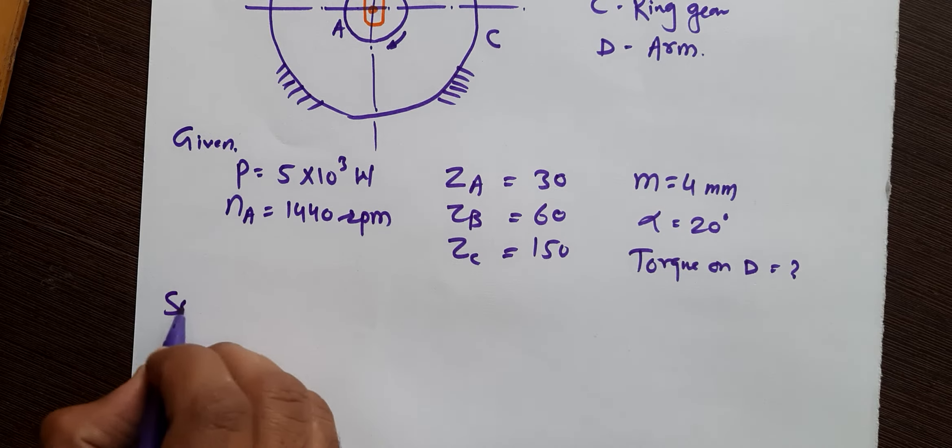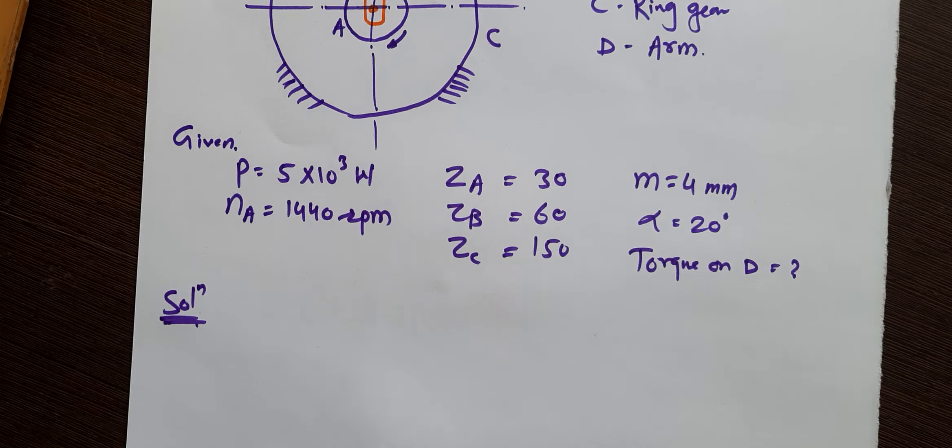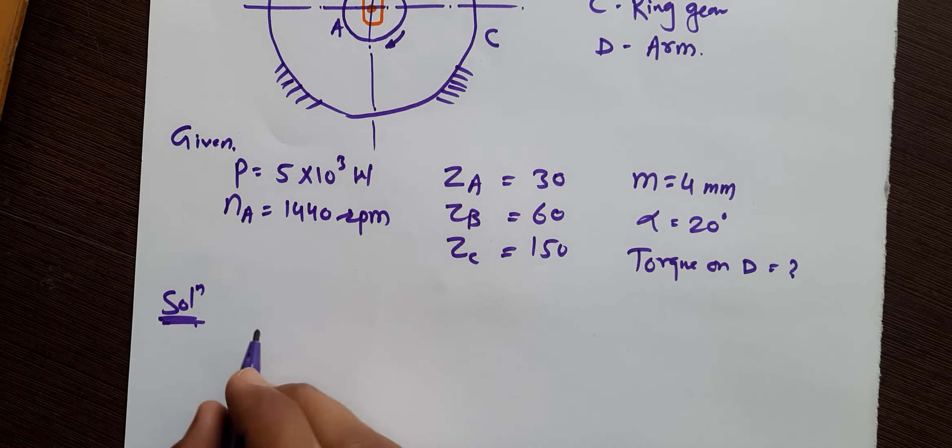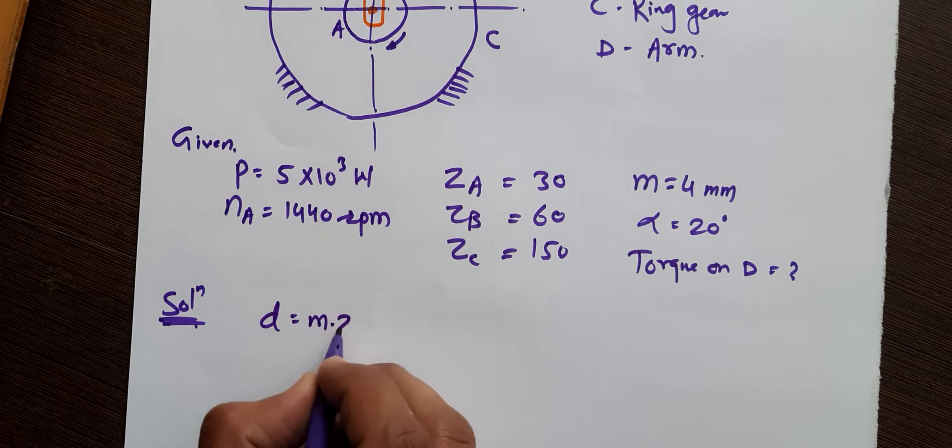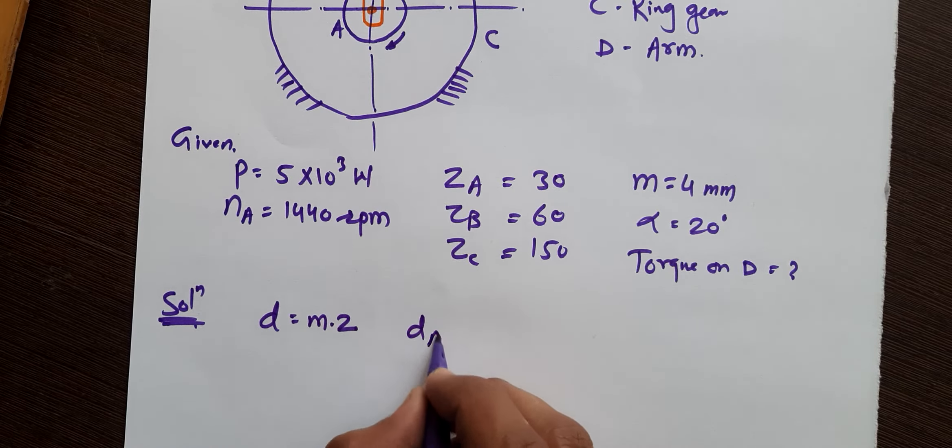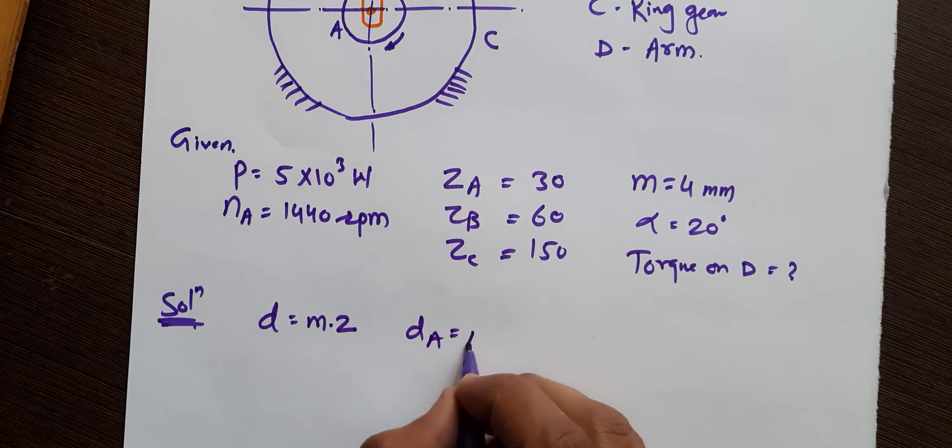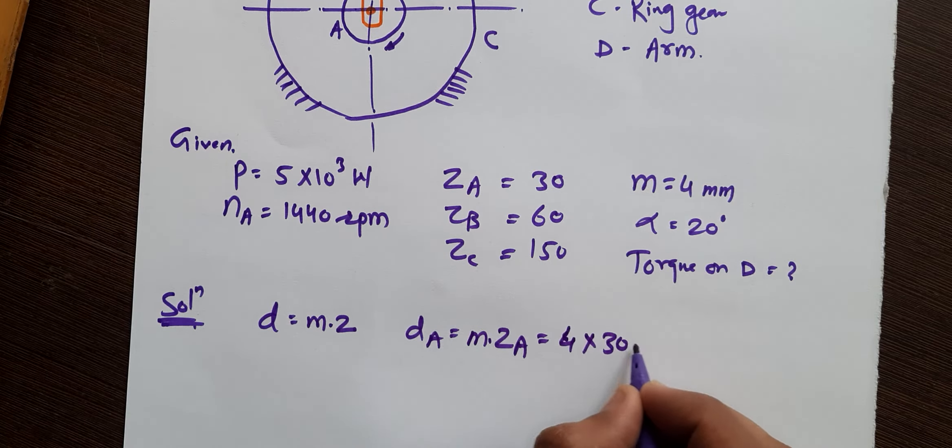Now solution. First we will find the diameters of each gear. So here we have D = M × Z, this is the formula to find diameter of the gear. Now DA we will find: DA = M × ZA = 4 × 30, so 120 mm.